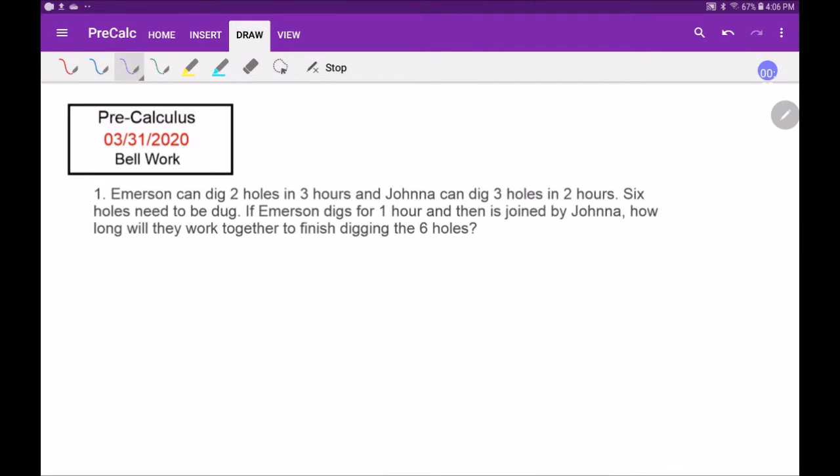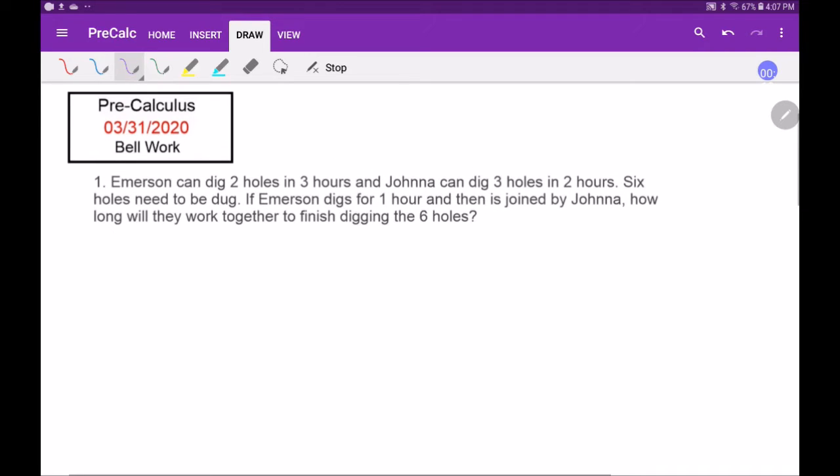Okay, so welcome back to pre-calculus. We just have one bell work today. Emerson can dig two holes in three hours. So we'll say the rate of Emerson is two holes in three hours, also known as 0.67.